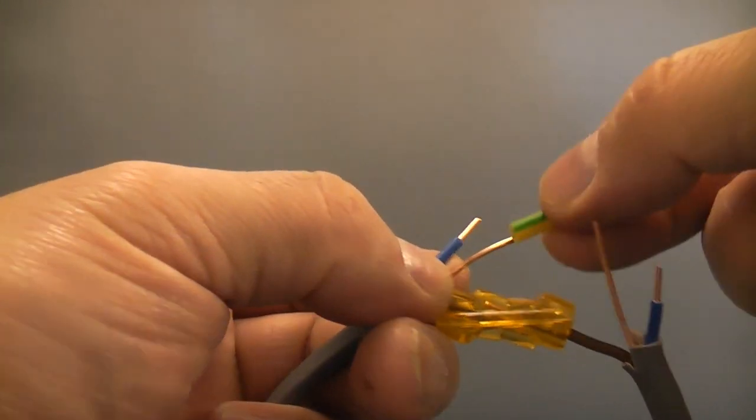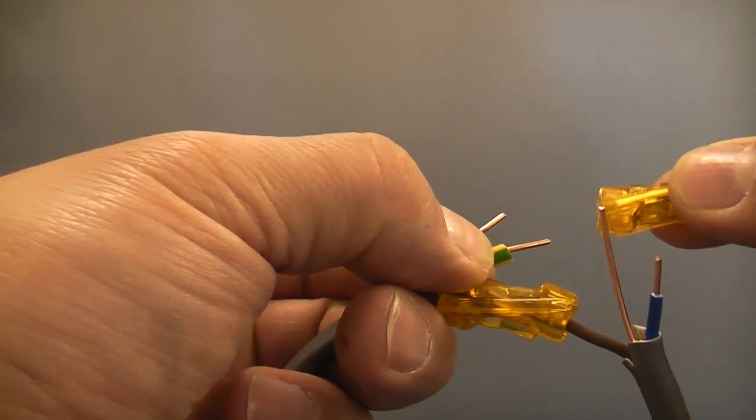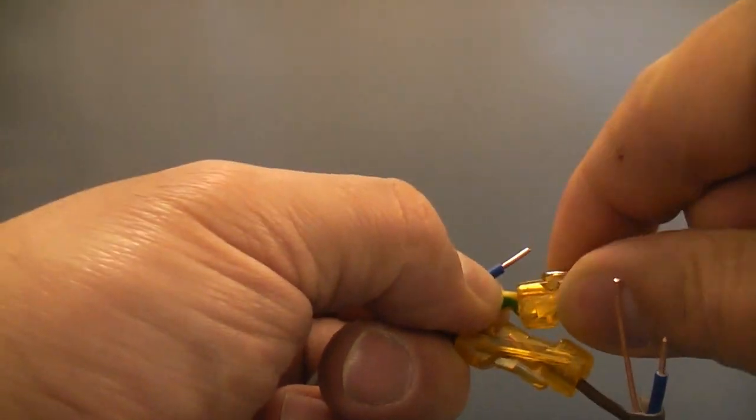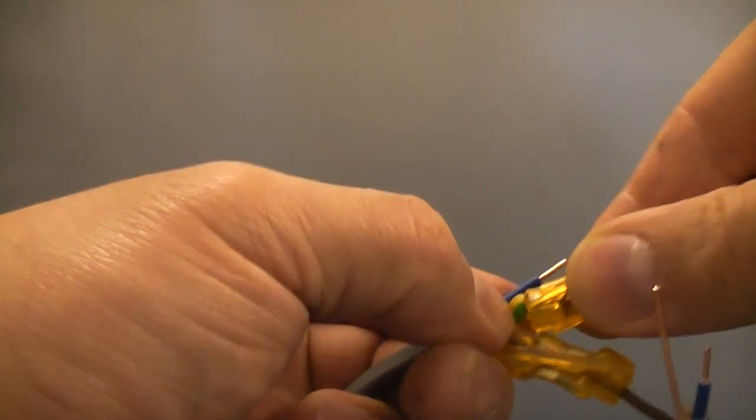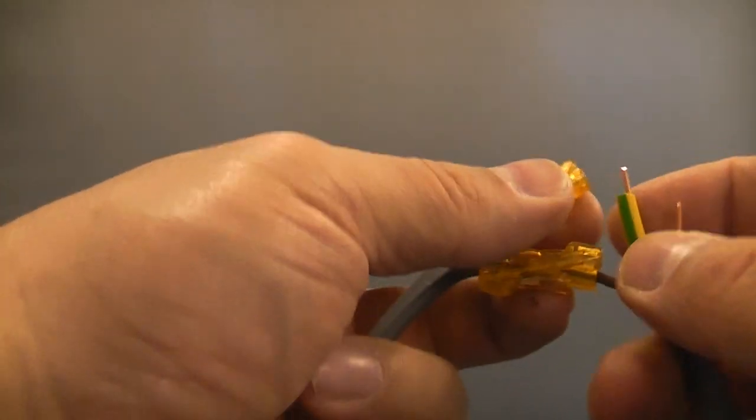Now just do the earth wire. Just shove some sleeve on there and then we'll push that directly into the connector. Now we'll do the same on that side.